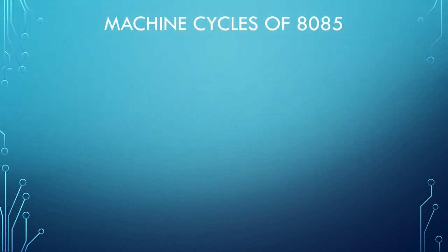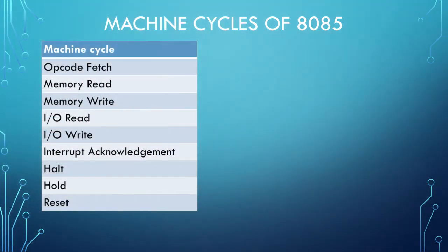Now we will list different machine cycles of 8085, that is different operations performed by the processor. Here we have opcode fetch, memory read, memory write, IO read, IO write, interrupt acknowledgement, halt, hold and reset.